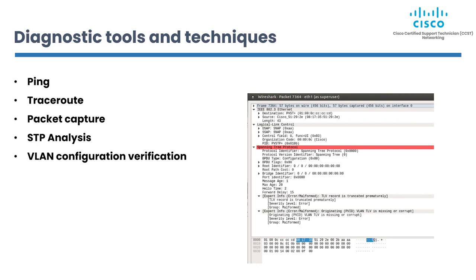To troubleshoot switching issues, network administrators can use various diagnostic tools and techniques. Ping and traceroute can verify Layer 2 reachability from point A to point B. Packet capture can capture and analyze network traffic to identify issues such as packet loss or congestion. STP analysis is a tool used to identify network loops and redundant paths, and can help identify misconfigured settings or hardware issues. VLAN configuration verification is used to verify VLAN configurations and ensure they are configured properly, diagnosing connectivity issues or congestion caused by VLAN misconfiguration.